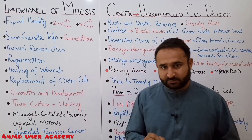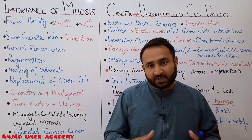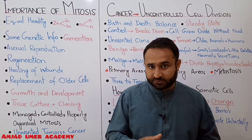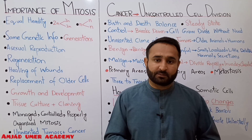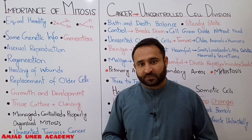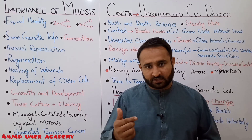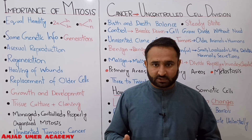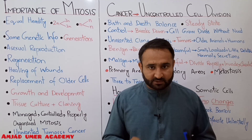Tissue culture means to grow tissues in an artificial medium or laboratory. Tissues are grown in the lab, whether plant or animal tissues, and they grow through mitosis. Regarding cloning — asexual reproduction is a form of cloning in which genetically identical cells called clones are produced. These genetically identical cells are clones. This is cloning, and it is based on mitosis.